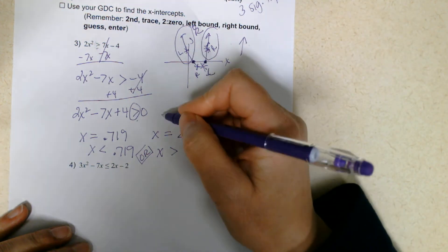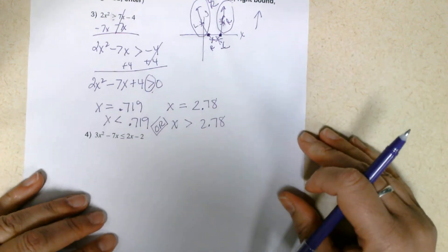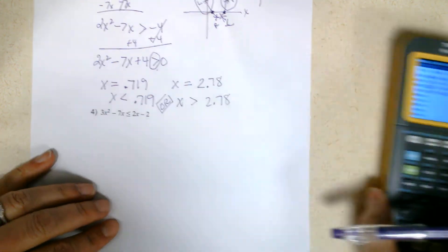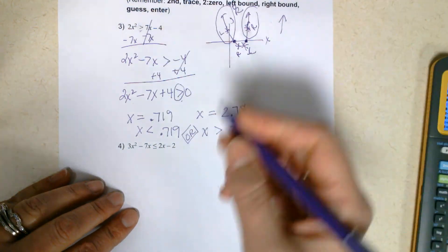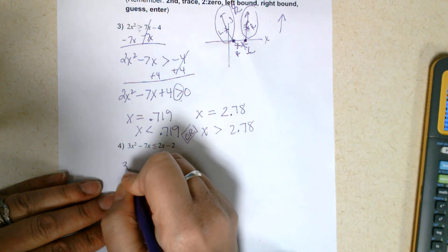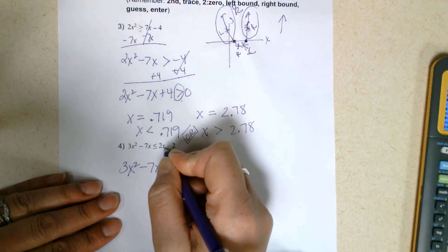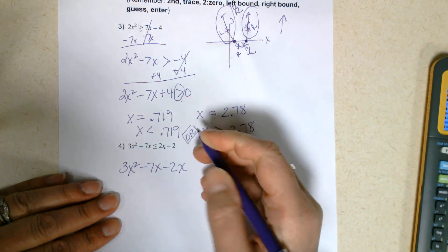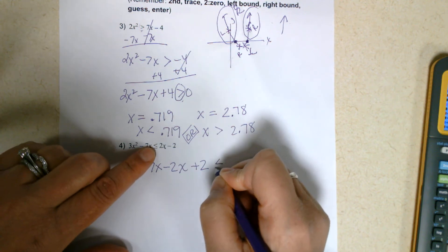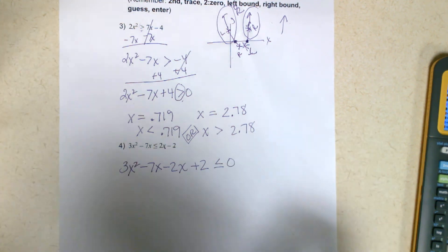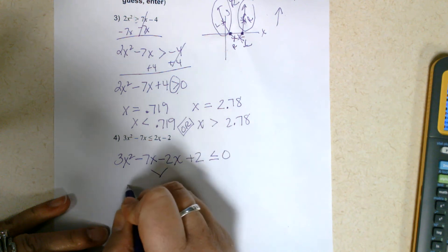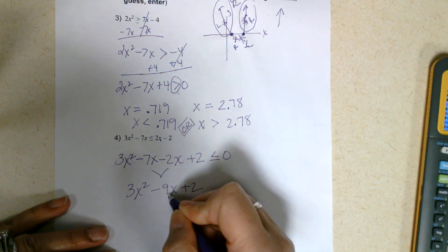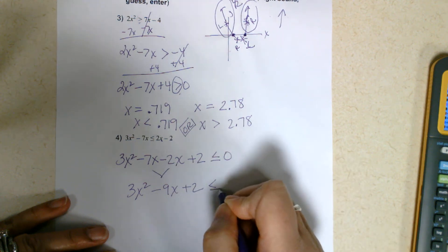Let's try the last one. The first thing we have to do is move everything over to the left side. So we have 3x squared minus 7x — this is a positive 2x over here, so it becomes minus 2x — and this is a negative 2, so it becomes positive 2, giving us less than or equal to 0. Let's combine like terms: 3x squared minus 9x plus 2, less than or equal to 0. Negative 7 minus 2 is negative 9.